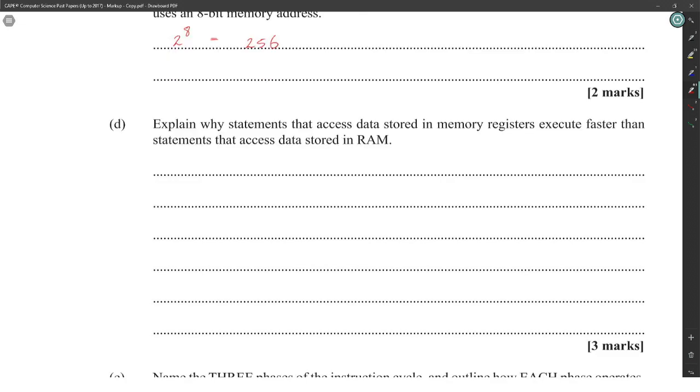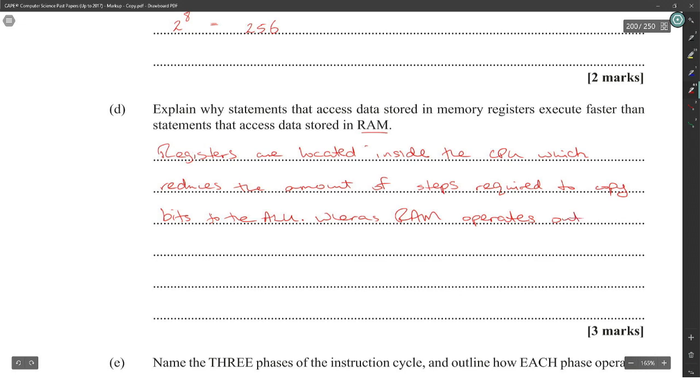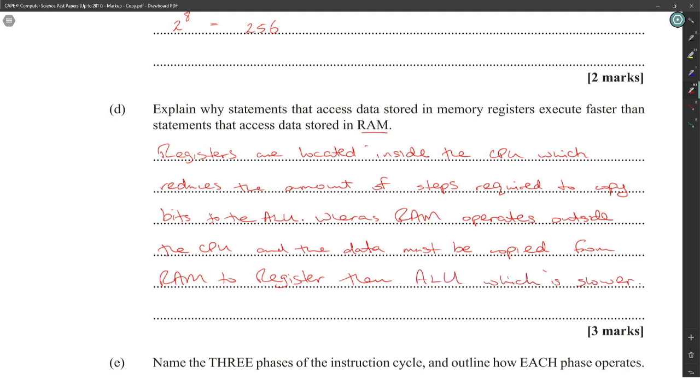Explain why statements that access data stored in memory registers execute faster than statements that access data stored in RAM. Registers are located inside the CPU, which reduces the amount of steps required to copy bits to the ALU, whereas RAM operates outside the CPU and the data must be copied from RAM to register then to ALU, which is slower. It's basically because it's closer - you don't have to do as much operations to get the data, which makes it faster with proximity.